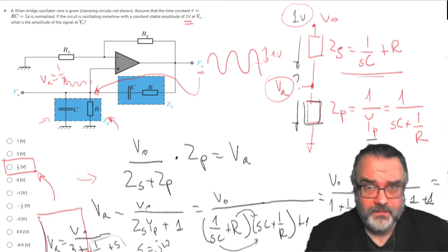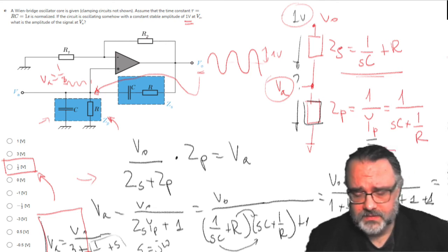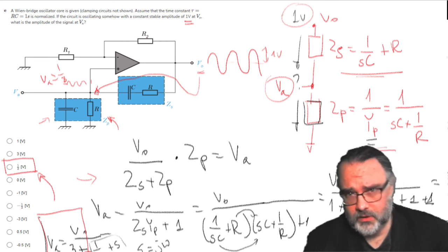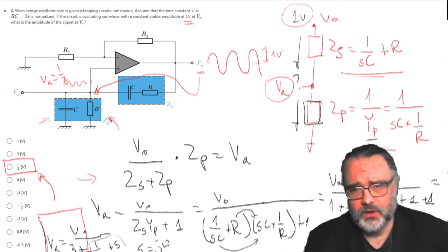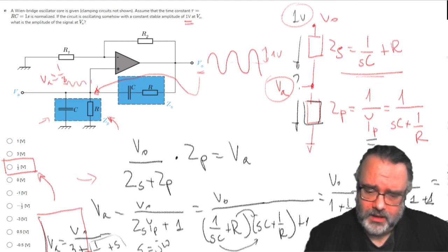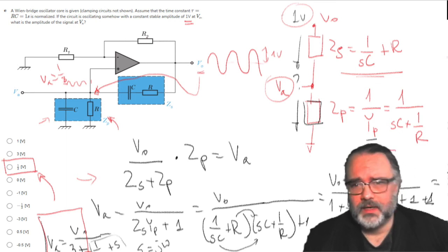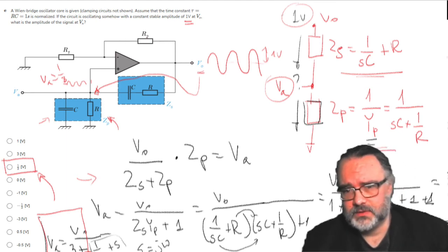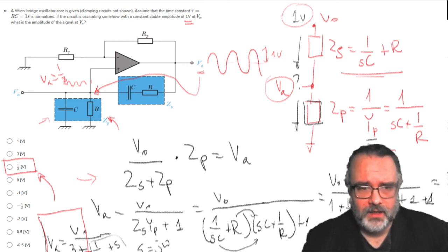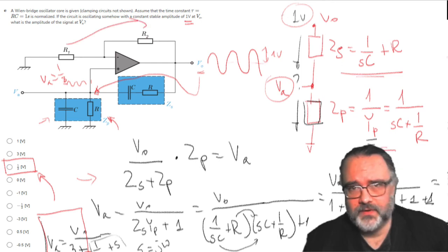And at the frequency of oscillation if I substitute S with j omega for sine wave signals, j omega zero, at omega zero the imaginary part must be zero. Because I should not have a phase shift, and my Wein bridge here in this feedback has no phase rotation. So this is a real number amplification.